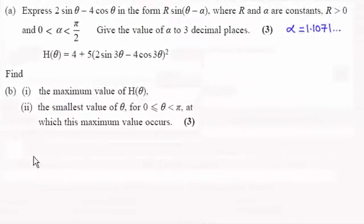Hi there. Now for this part, part B, we're asked to find the maximum value of h of theta, where h of theta is given as this equation here. And then go on to find the smallest value of theta in this interval for which the maximum value occurs.